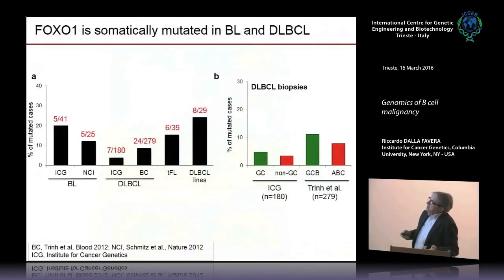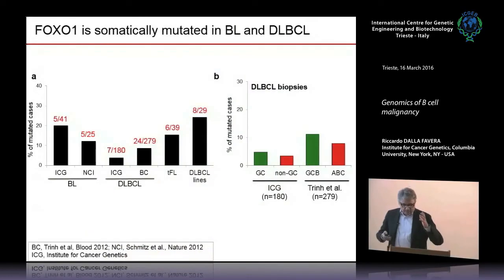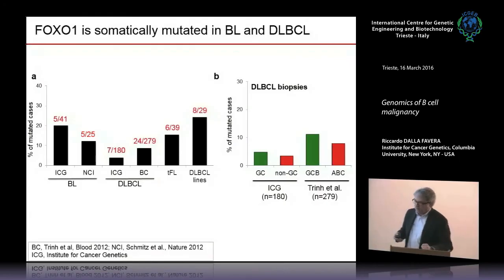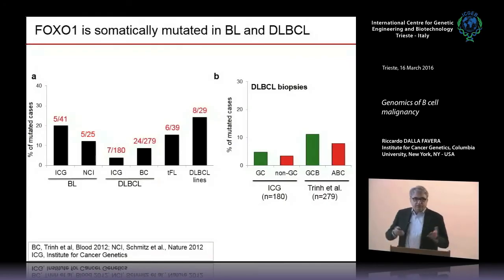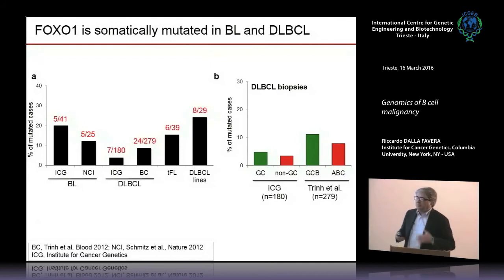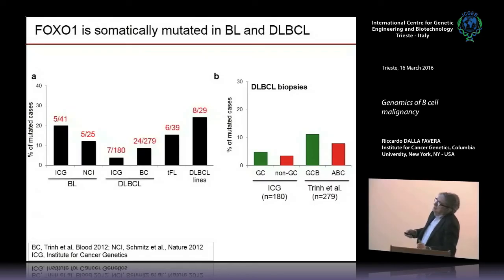We were very excited when we saw another transcription factor — the very famous FOXO1, studied in many other biological contexts — mutated in these tumors. This is the frequency of mutation; the mutations occur in the tumors we've been talking about and also in Burkitt lymphoma.